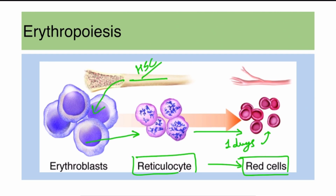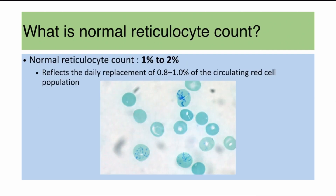Understanding this process is very important because it explains what happens in anemia and why we need to calculate the corrected reticulocyte count. The normal reticulocyte count is around 1 to 2 percent, though some references cite a range of 0.5 to 2.5 percent. In this picture you can see examples of reticulocytes.